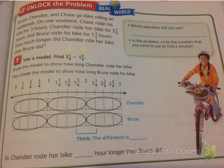Let's look down at our number line here. First, it says shade the model to show how long Chandler rode her bike. Well, Chandler rode her bike for 2 1/4 hours. So shade in one, two, and 2 1/4 line is right here.